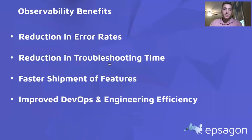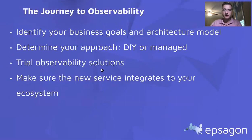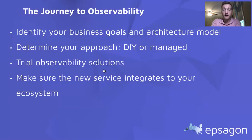Some of the benefits our customers are finding are reductions in application error rates, and by being able to pinpoint issues quicker, they have a significant reduction in their time spent troubleshooting. With this in mind, our customers have the added benefit of being able to ship features faster, and without the need to manually instrument every segment of their application, we help to improve efficiencies across the various technical organizations. As you start mapping out your journey to observability, identify the key business goals and KPIs you would like to measure against. Understand your application architecture and your approach to instrumentation, whether it will be manual or something managed for you. Ensure that you can easily and painlessly try a new solution within your environment and that it will effortlessly integrate across your varied and complex ecosystem.